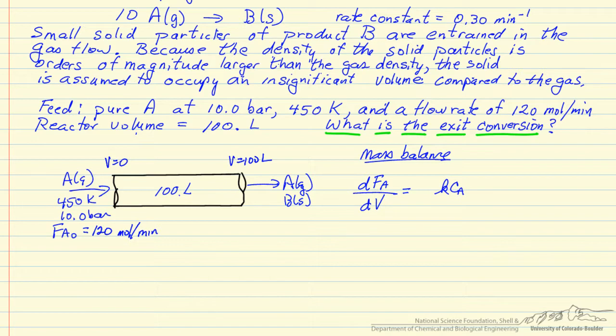Minus sign because it's a reactant, so the flow rate is decreasing. And then we put a 10 here to account for the stoichiometry. We're assuming k is defined as normally used, so we need to put a stoichiometric coefficient.